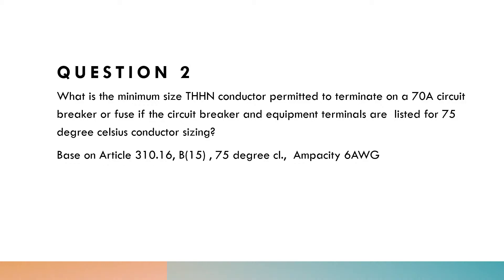The second question: what is the minimum size THHN conductor permitted to terminate on a 70-amp circuit breaker or fuse, if the circuit breaker and equipment terminals are listed for 75-degrees Celsius conductor sizing? The rule for terminating conductors within a terminal is very important — the conductor terminated within that terminal should be of the same temperature rating or greater.